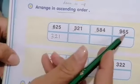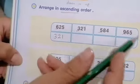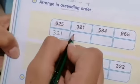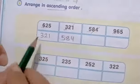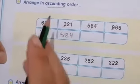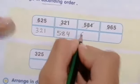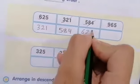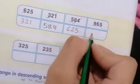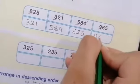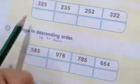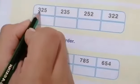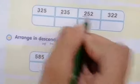Now we have 6, 5, 9 remaining. Which is the smallest? Number 5 — excellent. So 584 is next. Then we have 6 or 9. Excellent — 6, so 625 comes next. And the largest number, the greatest number, is 965. So the ascending order is: 321, 584, 625, 965.